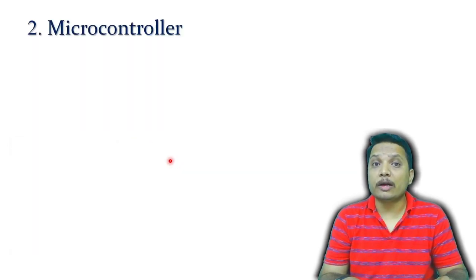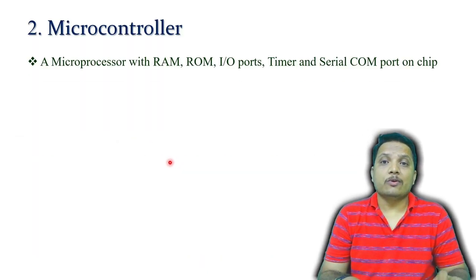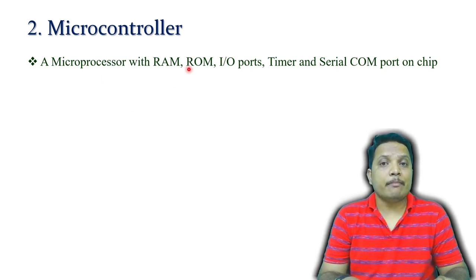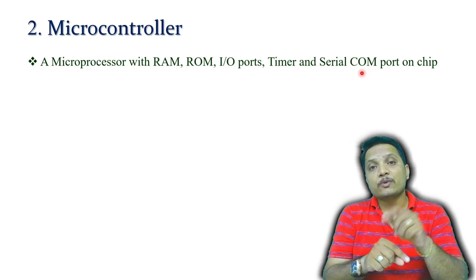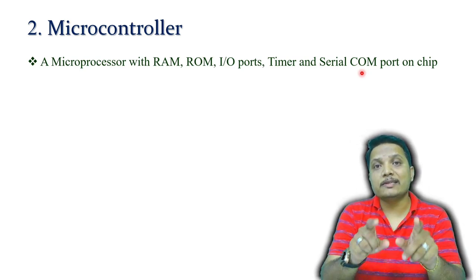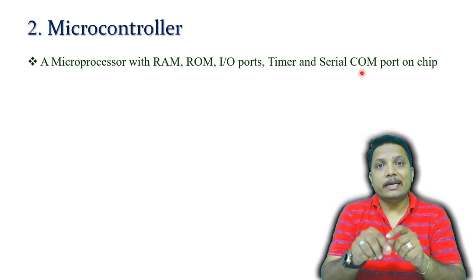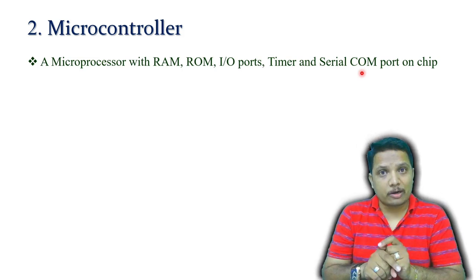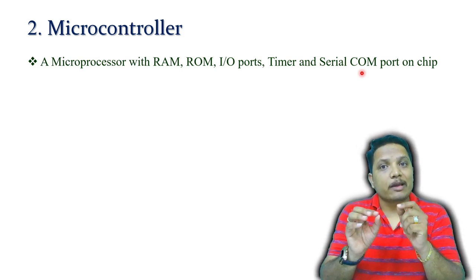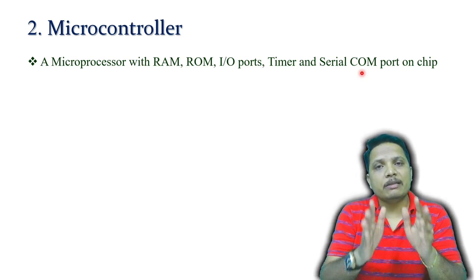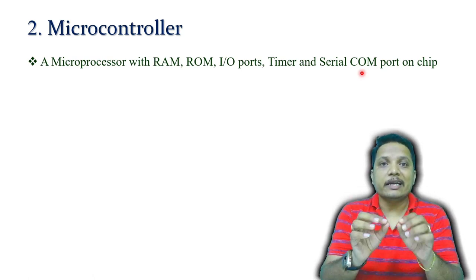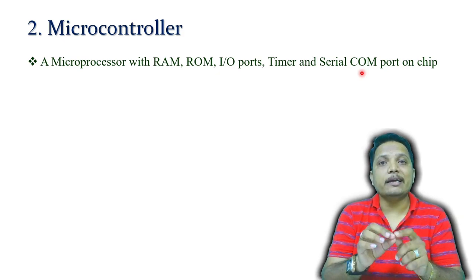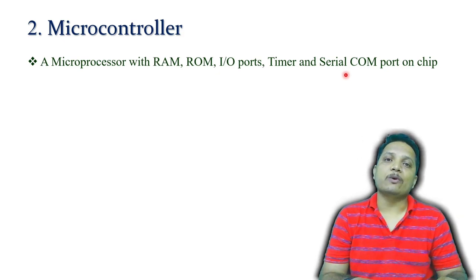Now let me explain the microcontroller. A microcontroller has RAM, ROM, input/output ports, timer, and serial communication port all integrated in a single chip. In a microprocessor, we don't have all those things in a single chip. The microprocessor has higher capability compared to the microcontroller, while the microcontroller integrates all those peripherals in a single chip but its capability is lower compared to a microprocessor.